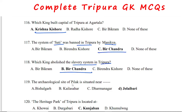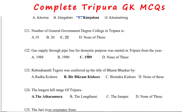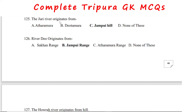The archaeological site of Pilak is situated near Jolaibari. The heritage park of Tripura is located at Punjaban. Gas supply through pipeline for domestic purposes started in Tripura from 1989. Rabindranath Tagore was conferred the title Bharat Bhaskar by Virbikram Kishor Manika. The longest hill range of Tripura is the Ataramura hill range. The Juri river originates from Jampuy hill. River Deo also originates from Jampuy range.